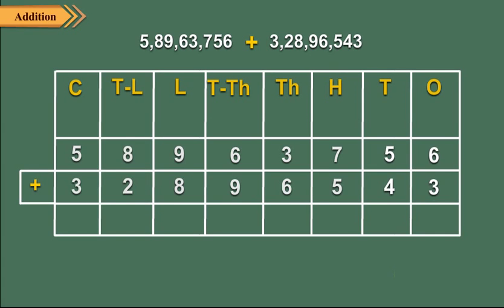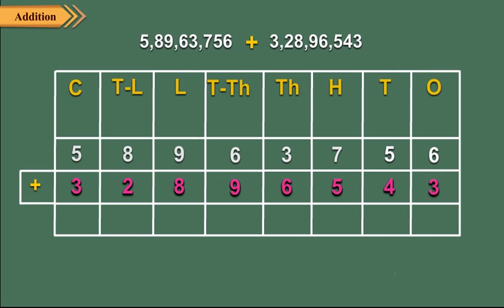Let us add 5 crore 89 lakhs 63,756 and 3 crores 28 lakhs 96,543. Arrange the numbers in columns. Now add ones, tens, hundreds, thousands, ten thousands, lakhs, ten lakhs, and crores column respectively. So 5 crore 89 lakhs 63,756 plus 3 crores 28 lakhs 96,543 is equal to 9 crores 18 lakhs 60,299.